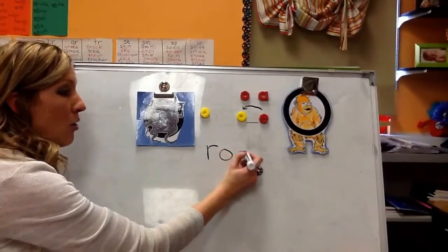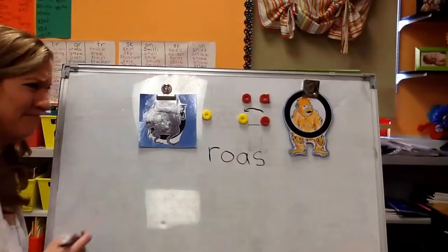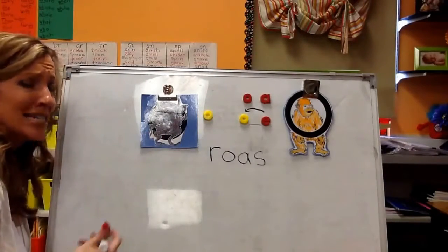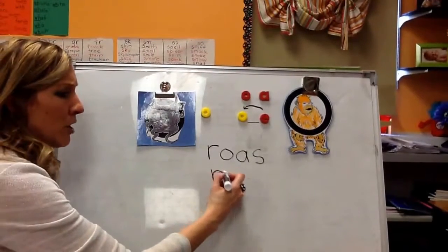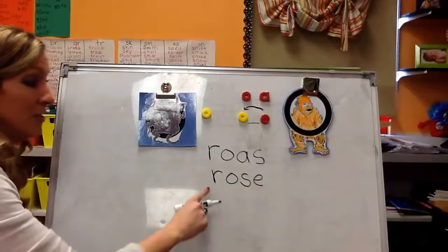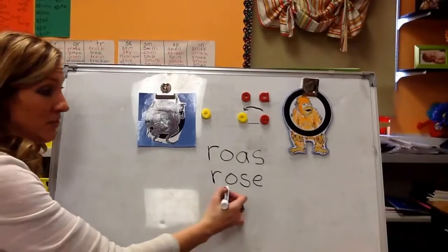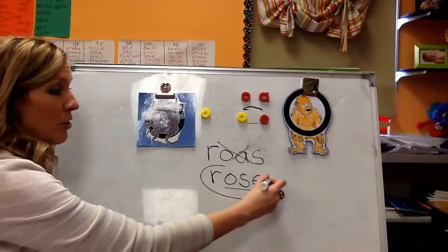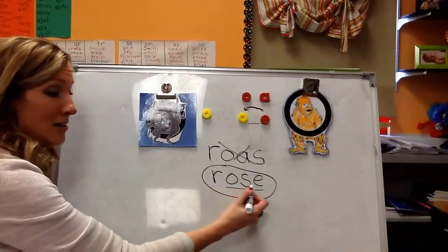R-O-S. Hmm. I don't think I've ever seen that word before. That's with O-A. Let's try O consonant E. R-O-S-E. Oh, this definitely looks right. I've seen this before. Rose. So as a writer, I would write rose as R-O-S-E.